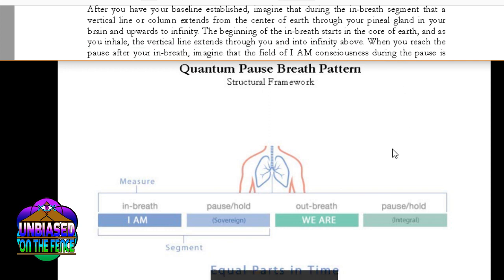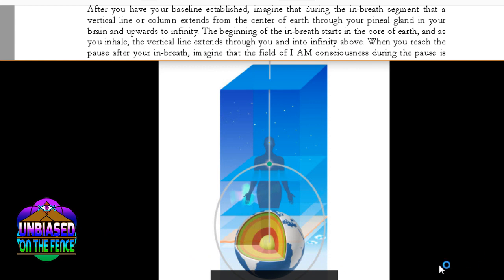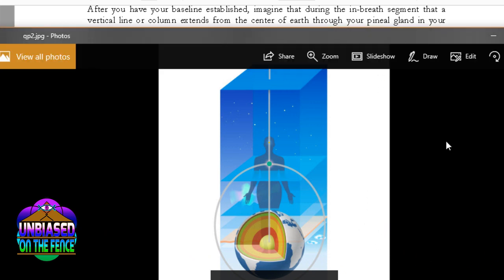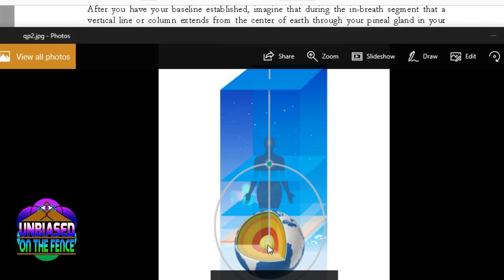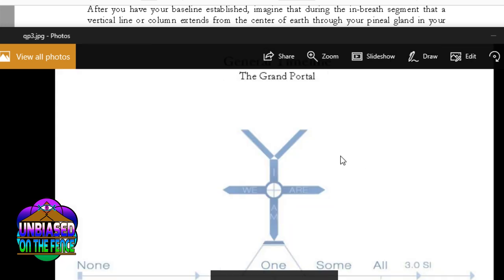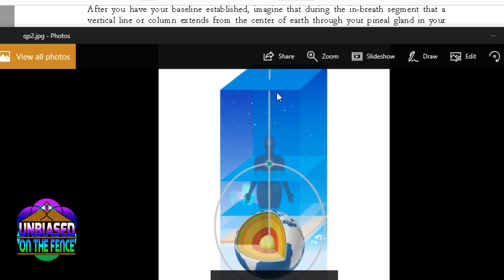Okay. Now it gets into this visualization that you can incorporate. And it's basically, I think it'd be better if I show the image, where you sort of imagine breathing, while you're breathing in, a vertical line coming up through your heart and through your pineal gland and going out into infinity.